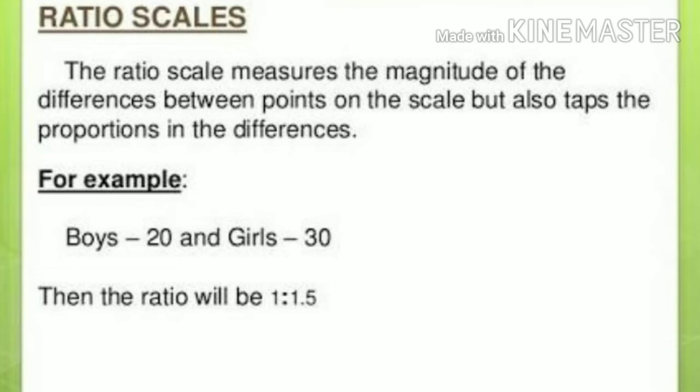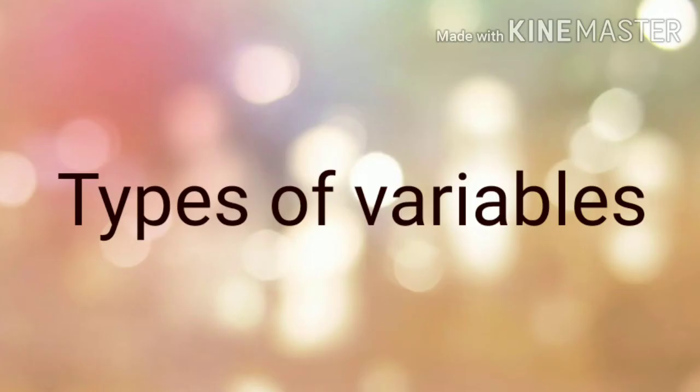I hope the different types of scales are clear to you — these are the measures of how to measure variables. Now let's check out the different types of variables. There are different types of variables such as continuous variable, discrete variable, dependent variable, independent variable, extraneous variable, confounding variable, categorical variable, demographic variable, active, and attributed variables.